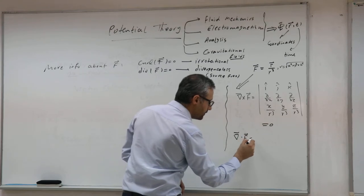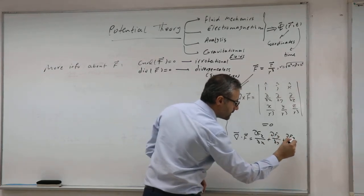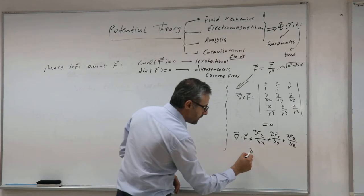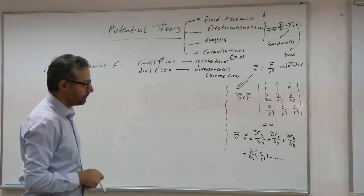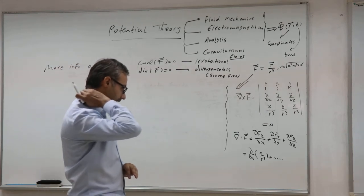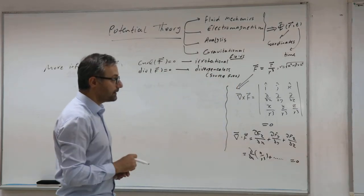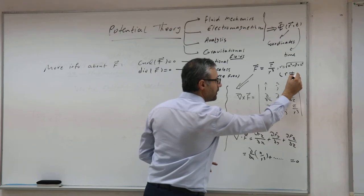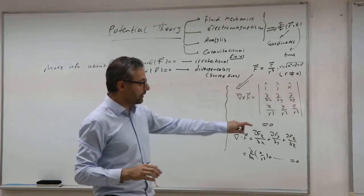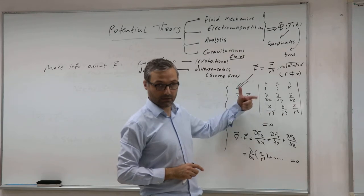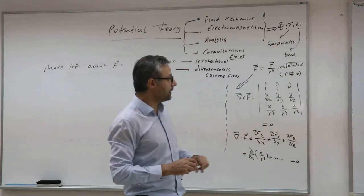The divergence of that will also be zero — except at one point. All these calculations should be done when R is not zero. When you are near the origin (x=0, y=0, z=0), R tends to zero and this quantity becomes infinity. So this calculation should be done everywhere except at R equals zero. For such vector fields, when they are irrotational and divergence-less or source-free, there is another strategy to find the field.